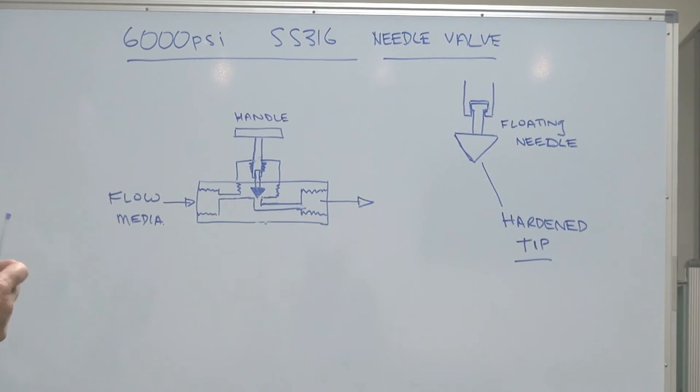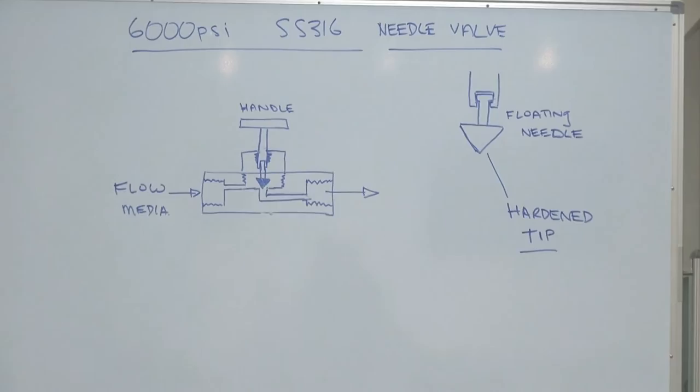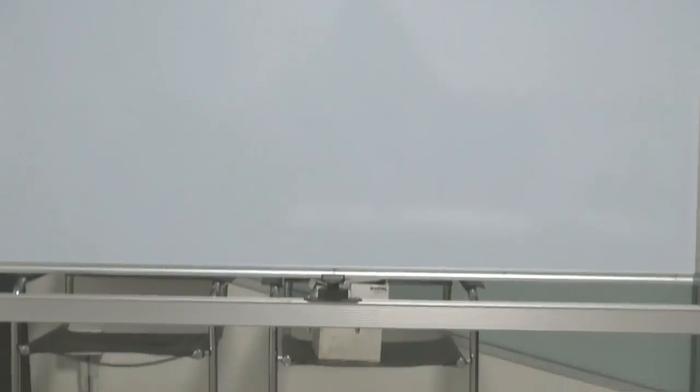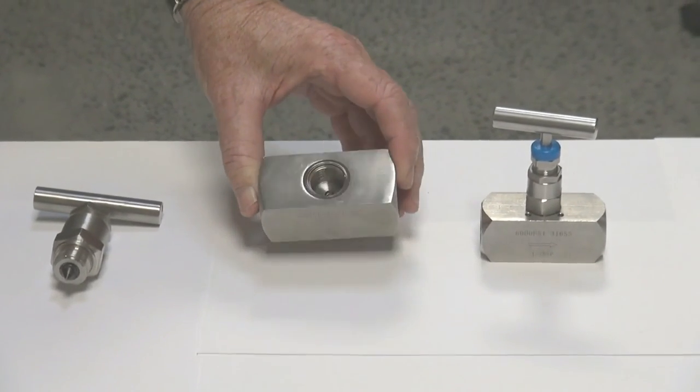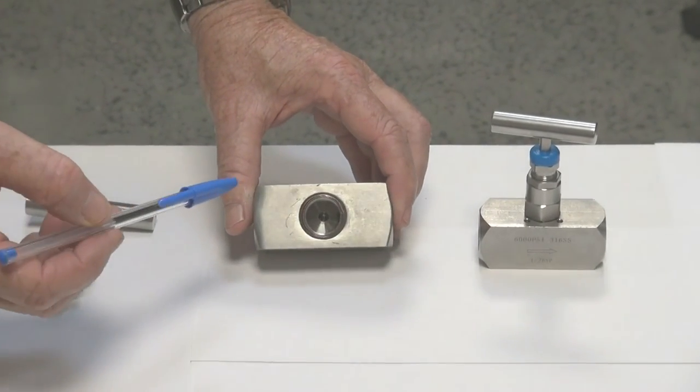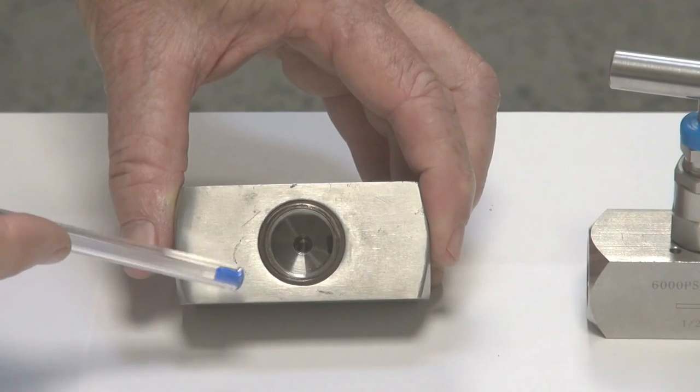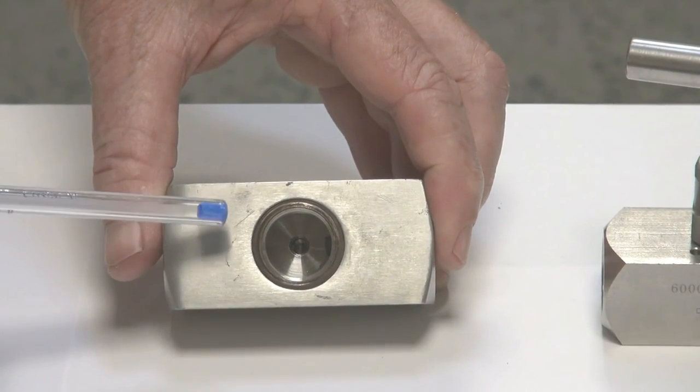Let's go over here now to have a look at the valve in disassembled form. If you look into the top, you can see the orifice inside - in this case, about a five-millimeter orifice. The flow is in the direction shown through here.